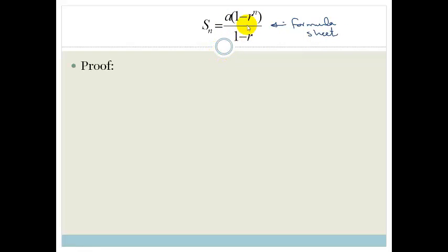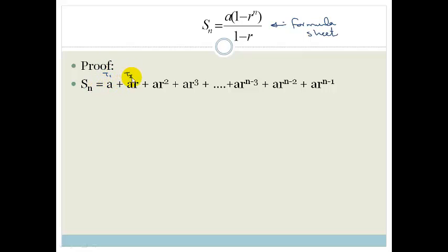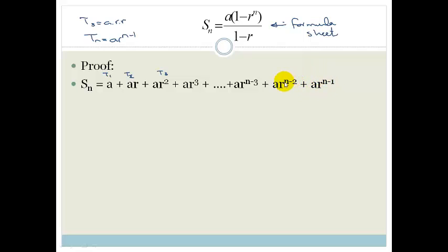So if we take Sn, remember this is geometric. Term 1 is a. Term 2 is a times the common ratio, which is ar. Term 3 is a times r times r, which is ar squared. Term 4 is ar cubed, and so on. The last term — we know that tn equals ar to the n minus 1. So n minus 2 is the second last term and n minus 3 is the third last term. We don't know how long the series is — it's n terms long.